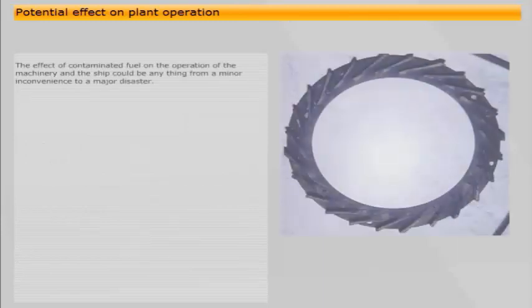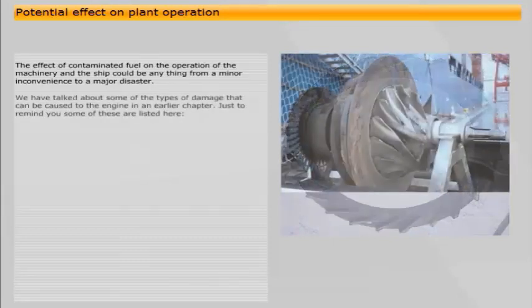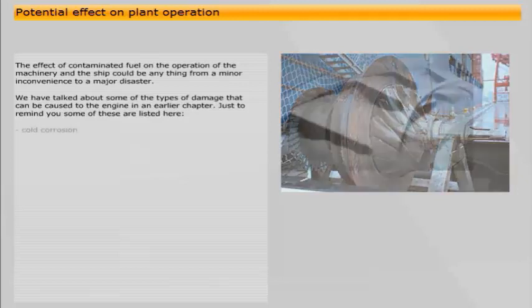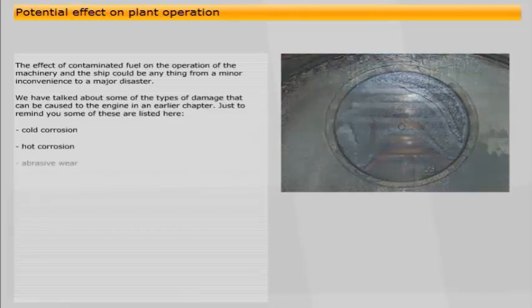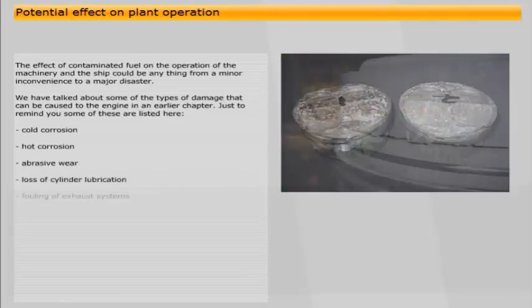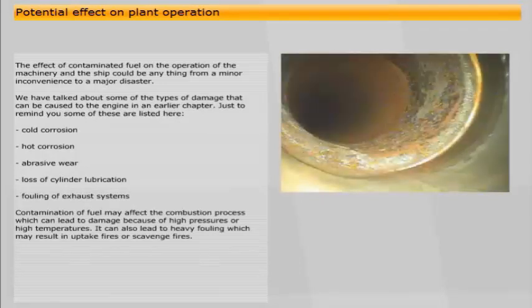The effect of contaminated fuel on the operation of the machinery and the ship could be anything from a minor inconvenience to a major disaster. We have talked about some of the types of damage that can be caused to the engine in an earlier chapter. Just to remind you, some of these are listed here: cold corrosion, hot corrosion, abrasive wear, loss of cylinder lubrication, and fouling of exhaust systems.